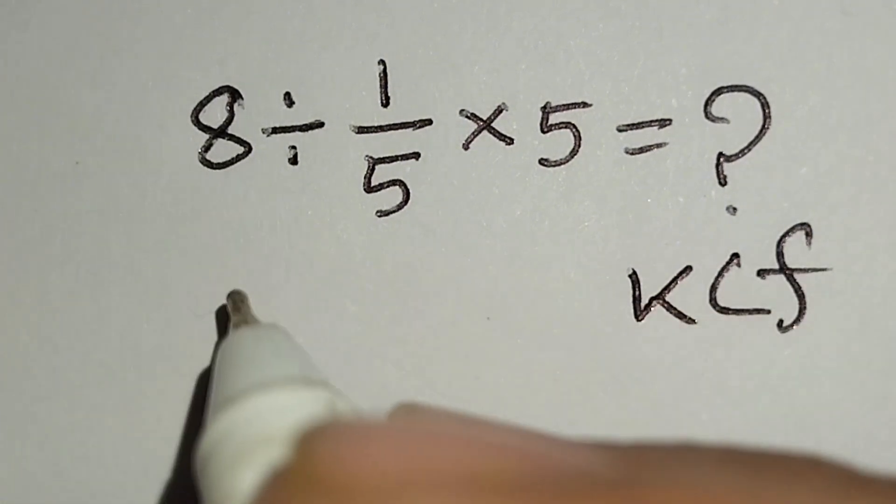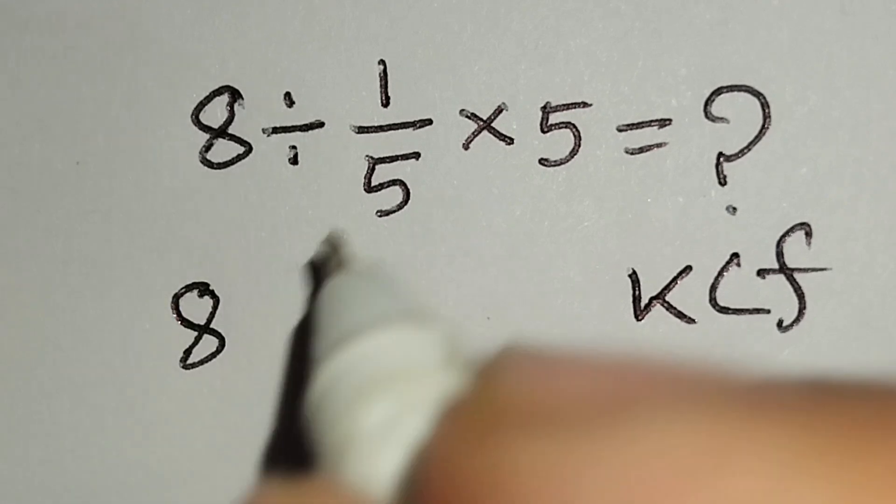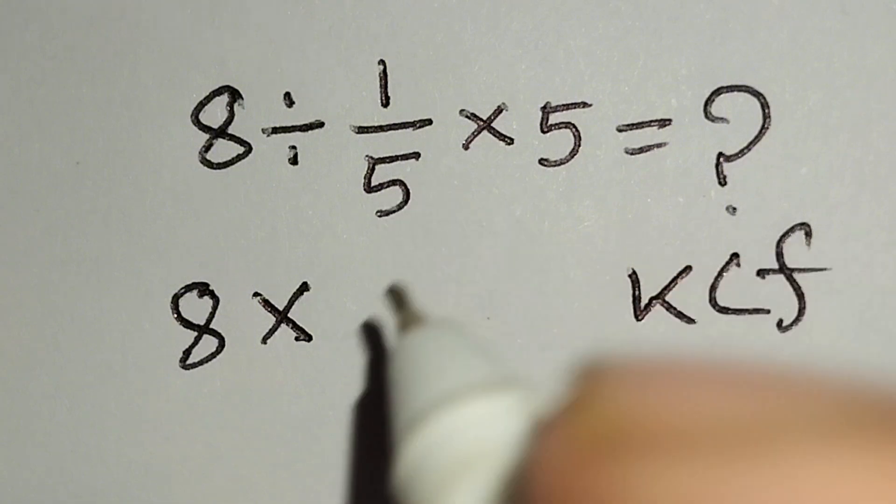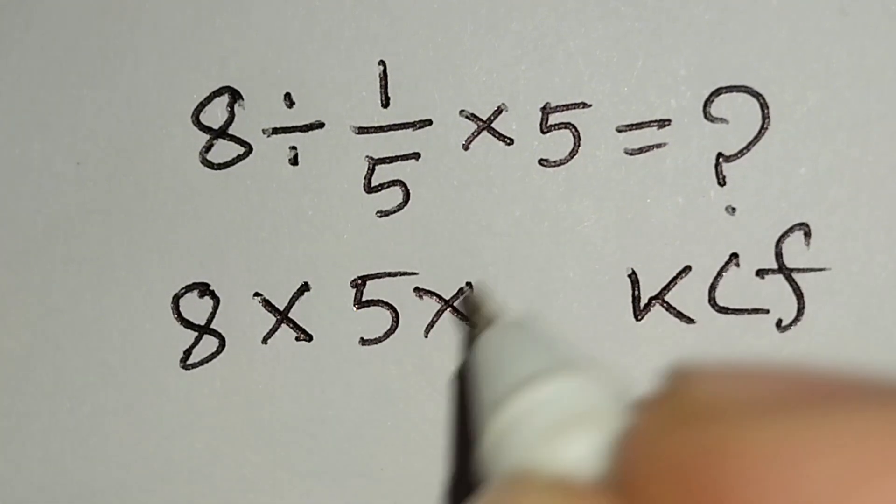At first, keep this fraction 8, change this division to multiplication, and flip this 1 over 5 to 5, times this 5.